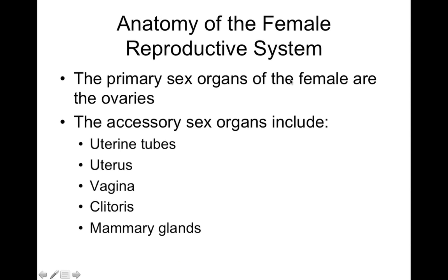In terms of the general anatomy of the female reproductive system, the primary sex organs are the ovaries — right and left. Accessory sex organs are associated with those ovaries. After ovulation, when the oocyte is expelled from the ovary, it is picked up by accessory structures like the uterine tubes, which transport the egg toward the uterus. The uterus is associated with the vagina, and externally we have the clitoris. Also associated with the reproductive system are the mammary glands, which produce breast milk.